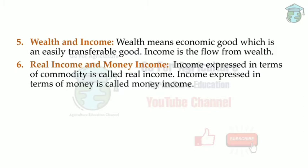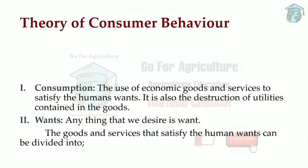Money income is income expressed in terms of money. For example, a manager earns 20,000 rupees per month — he is not dependent on any commodity, just his work. So real income is expressed in terms of commodity, and money income is expressed in terms of money.